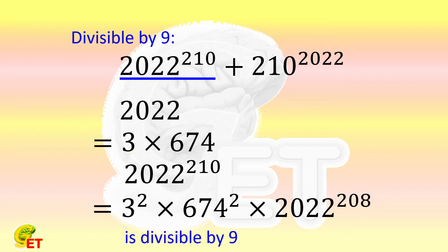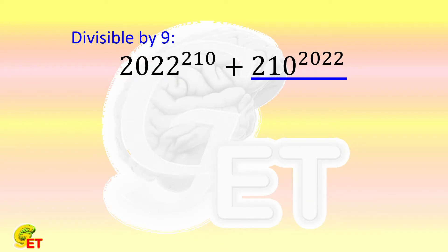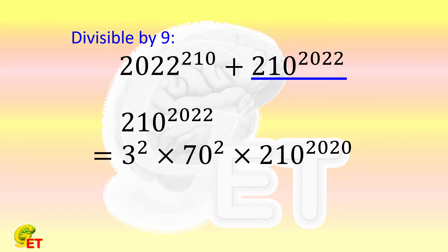Let's look at the second term then. For the same reason, 210 to the 2022nd power is equal to 3 to the second power times 70 to the second power, and then multiplied by 210 to the 2020th power. So it is also divisible by 9.